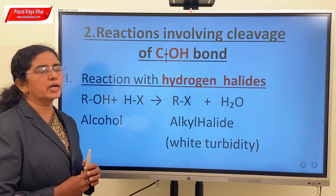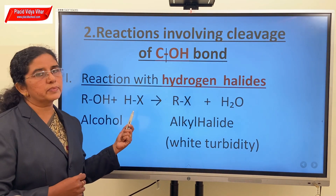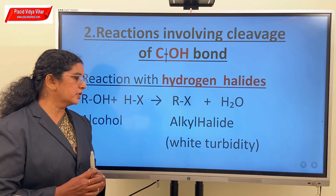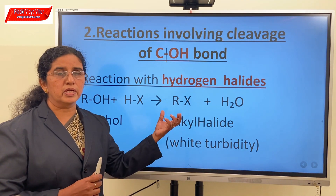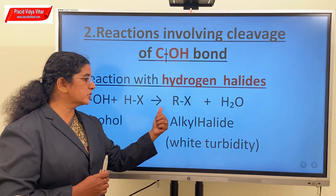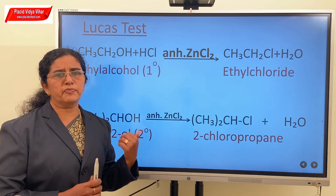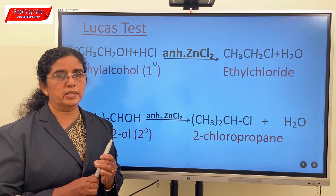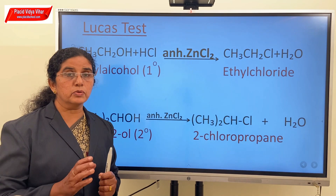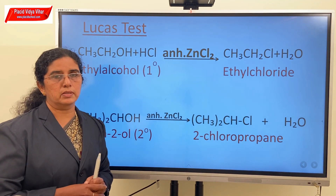The first class of reaction we have to study here is reaction with hydrogen halides. Alcohols react with hydrogen halides to form alkyl halides and water. Alkyl halides are usually present as white turbidity or they form a white turbid solution or white precipitate. Now these two compounds are colorless, and when they are mixed, the alkyl halide obtained appears as a white precipitate. There is a difference in the reactivity of primary, secondary and tertiary alcohols towards hydrogen halides, and this difference in reactivity is used to distinguish between them. This test is known as Lucas test.